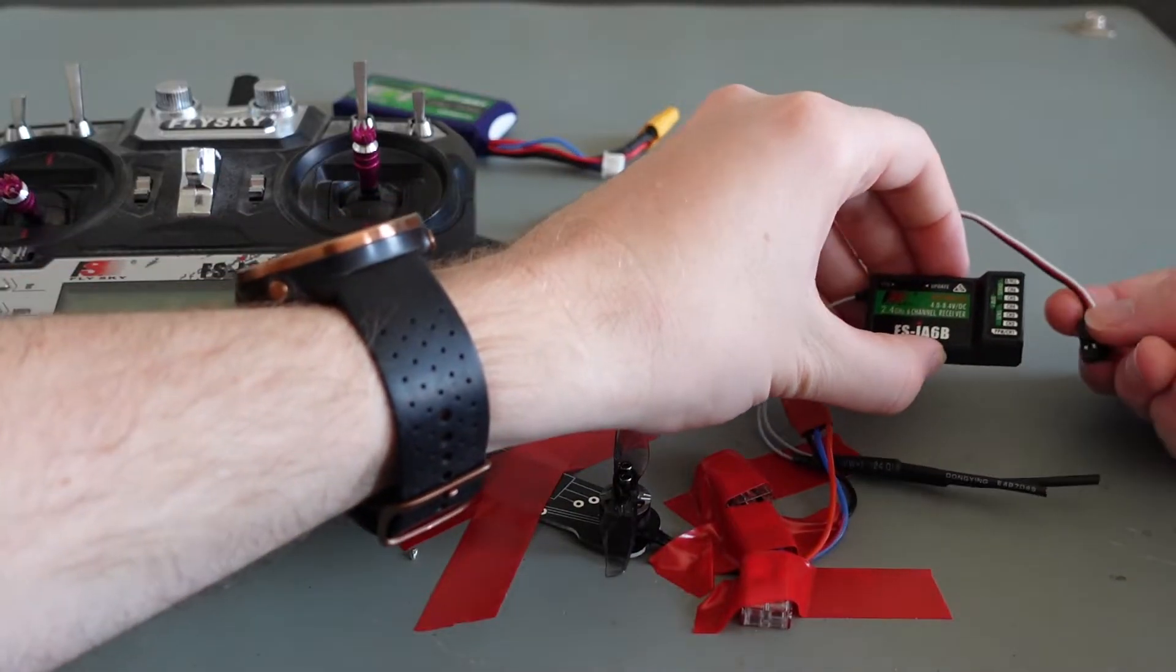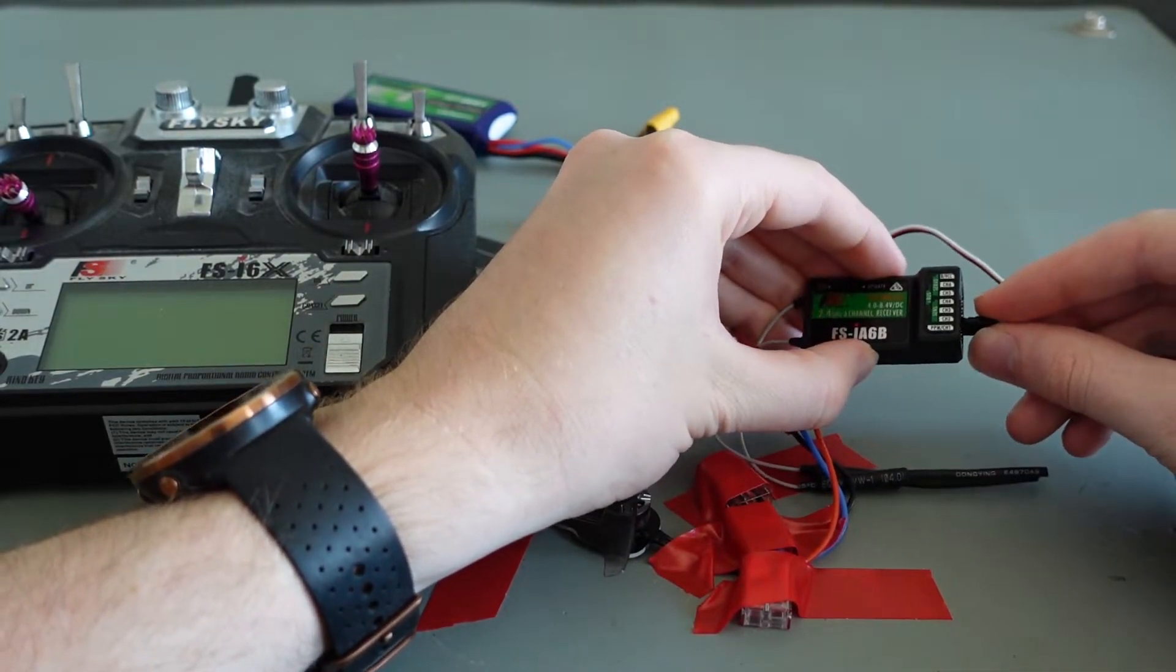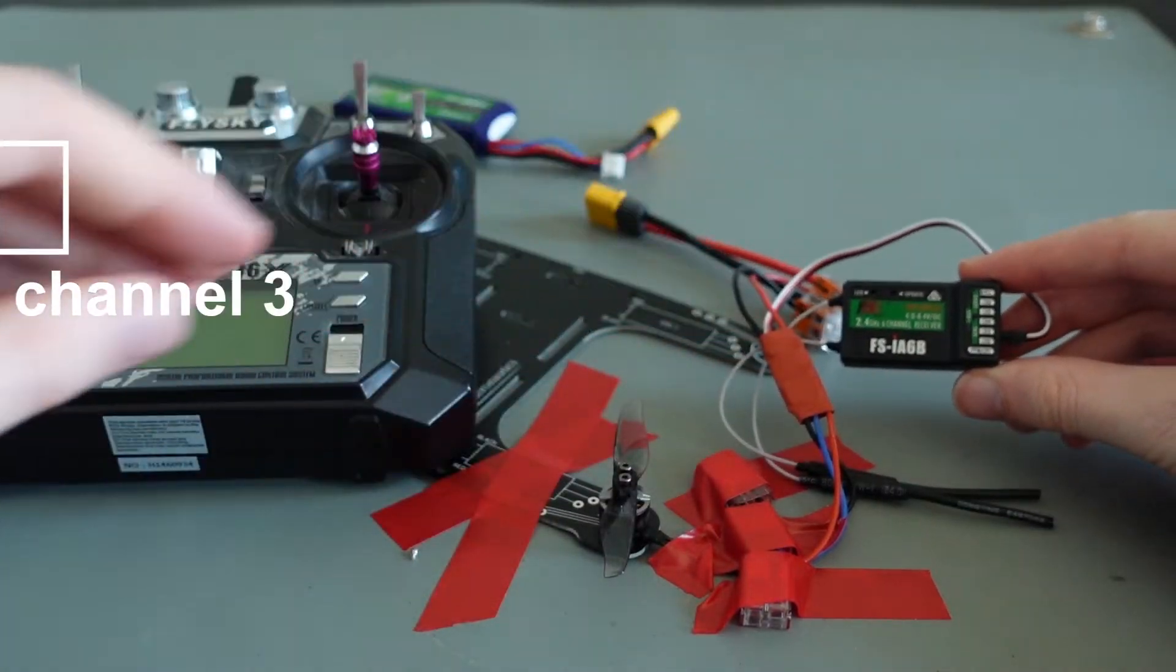Connect the ESC to channel 3 of the receiver. This channel corresponds to the position of the left stick on the radio transmitter.